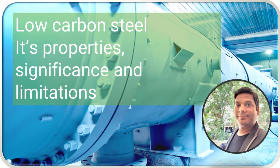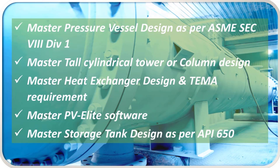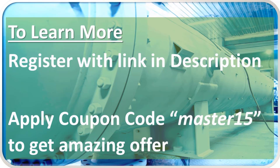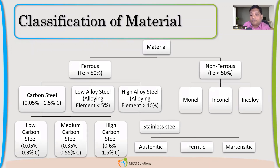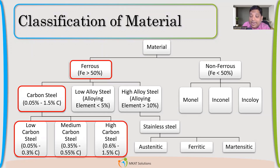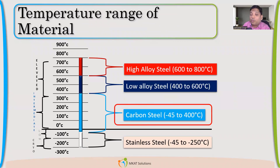In this lecture we are going to see low carbon steel — its properties, significance, and limitations. Within ferrous carbon steel, we have low carbon, medium carbon, and high carbon. The temperature range for low carbon steel is minus 45 to 370–380 degrees, which is what we call the low and intermediate range.